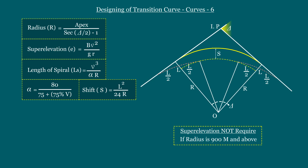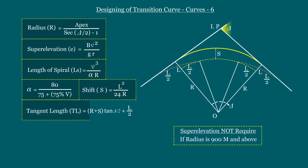The seventh step is to calculate the total tangent length to fix the tangent point. We already know the formula to find the tangent length in a simple horizontal curve is TL = r·tan(delta/2). Here, we have to add the shift value s along with radius r to get the exact radius of the combined curve, and also add the extended transition length l/2. So, to find the exact tangent length: TL = (r + s)·tan(delta/2) + l/2. Now we can measure the tangent length from the intersection point and fix it as the tangent point on the road.